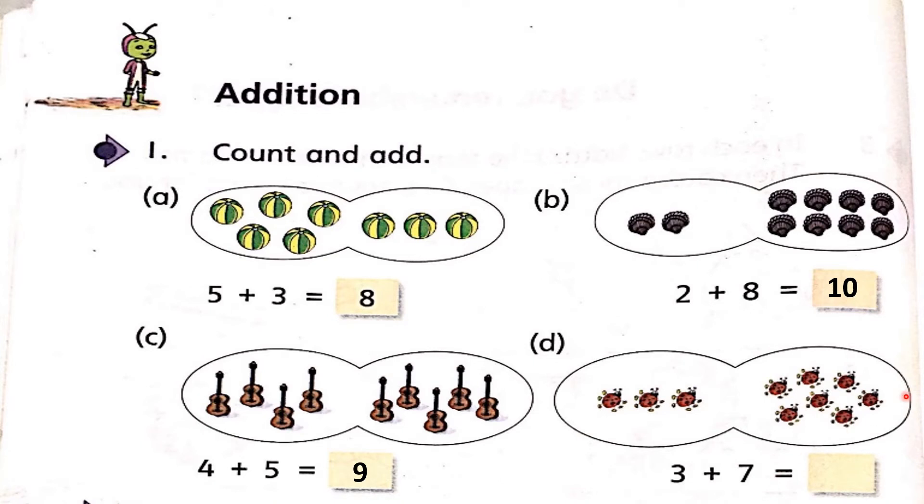Here, 7 ladybirds on my right hand side and 3 birds are here on my left hand side. Start counting after 7: 8, 9, 10. So, write answer 10 here.